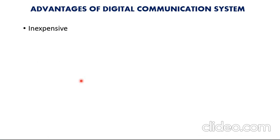Number one: inexpensive. The digital communication systems are simpler and cheaper compared to analog communication systems because of the advancements in IC technologies. Digital circuits are easier to design than analog circuits, so the cost is very less.